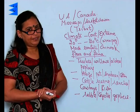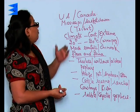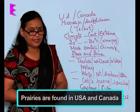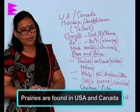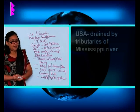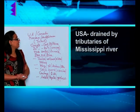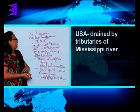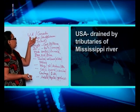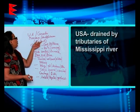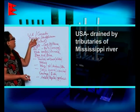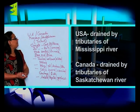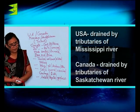Continuing with the prairies, you must know that the prairies are found in US and in Canada. These are drained by two major rivers — their tributaries in fact. The US is drained by the tributaries of the Mississippi River and Canada is drained by the tributaries of the Saskatchewan River.